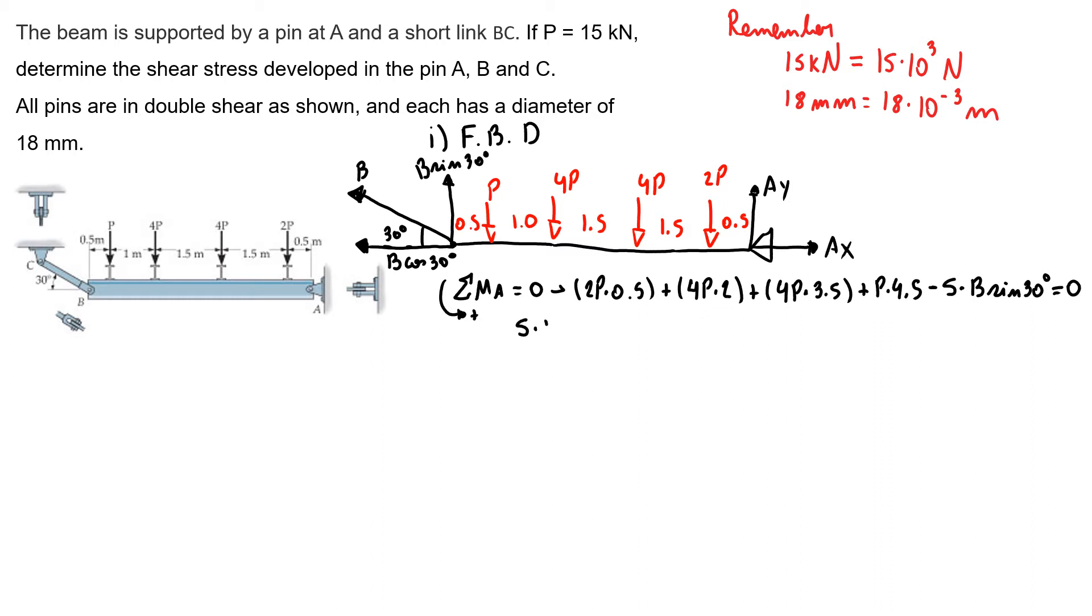minus 5 times B sine of 30 because it's going clockwise equals zero. So I have 5 times B sine of 30 equals 5.5P. So I have B equals 11P. Plugging my value of 15 kilonewtons, B is 165 kilonewtons.